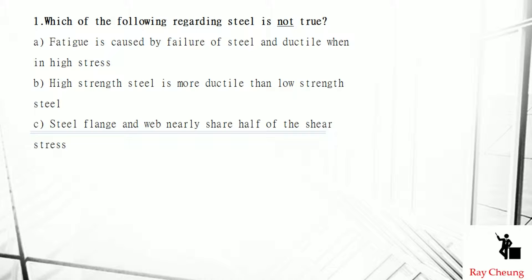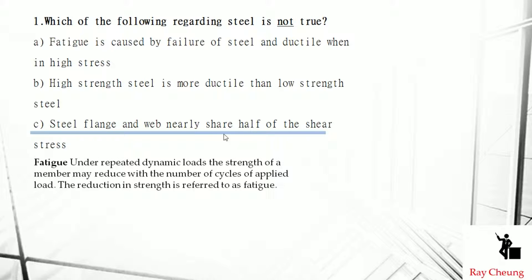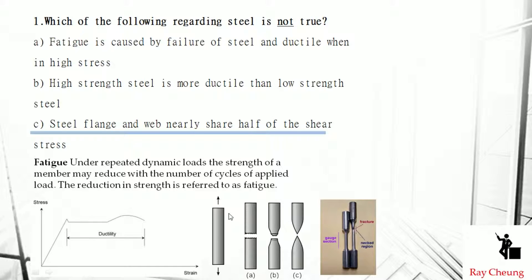The first question is about steelwork. You need to understand the terms fatigue and ductile. Fatigue is when a force is applied cyclically — like an earthquake going left and right repeatedly within a certain period. For ductile behavior, the force is applied and the material extends further before breaking. If it breaks suddenly we call it brittle, but if it extends further we call it ductile.